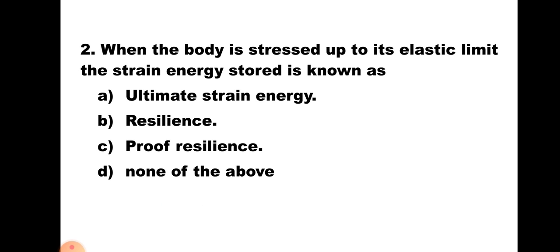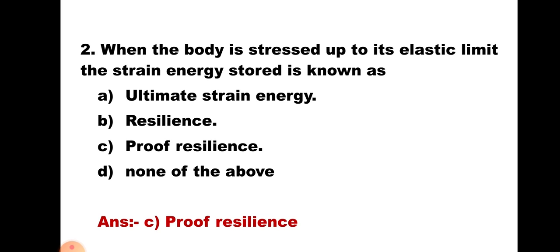Question number 2: When the body is stressed up to its elastic limit, the strain energy stored is known as — A. Ultimate strain energy, B. Resilience, C. Proof resilience, and D. None of the above. The strain energy stored is also known as resilience. But up to elastic limit means it is the maximum strain energy which can be stored, and it is known as proof resilience. Hence, the correct answer is C. Proof resilience.